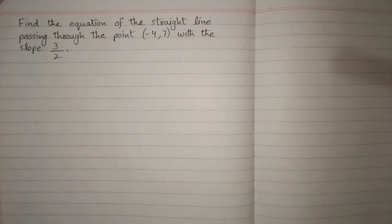In this video we will find the equation of the straight line passing through the point minus 4 comma 7 with the slope 3 upon 2.